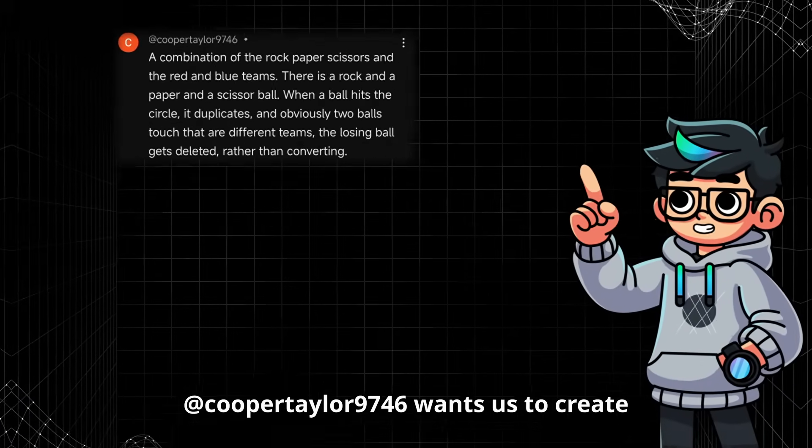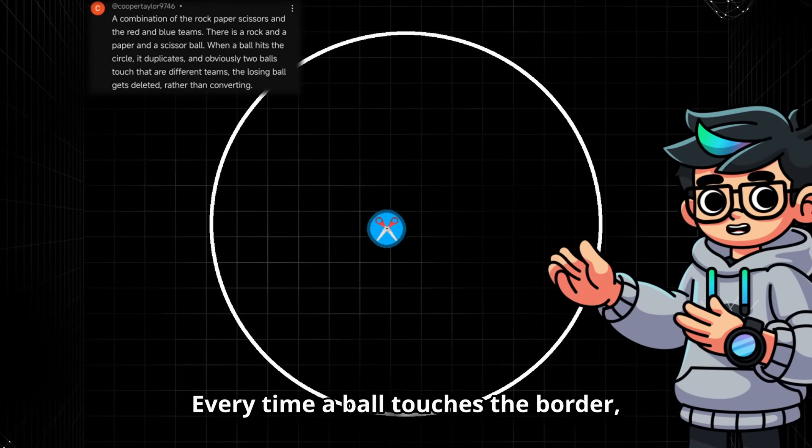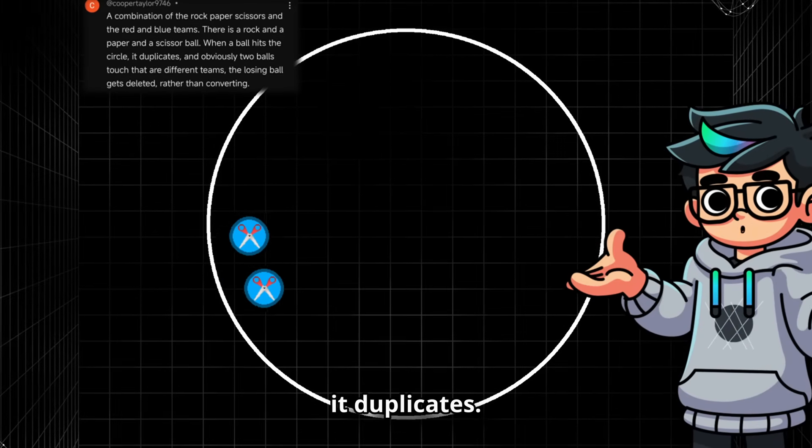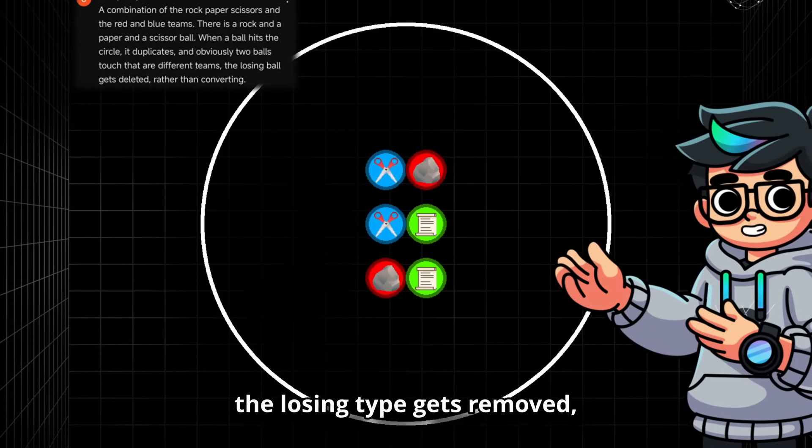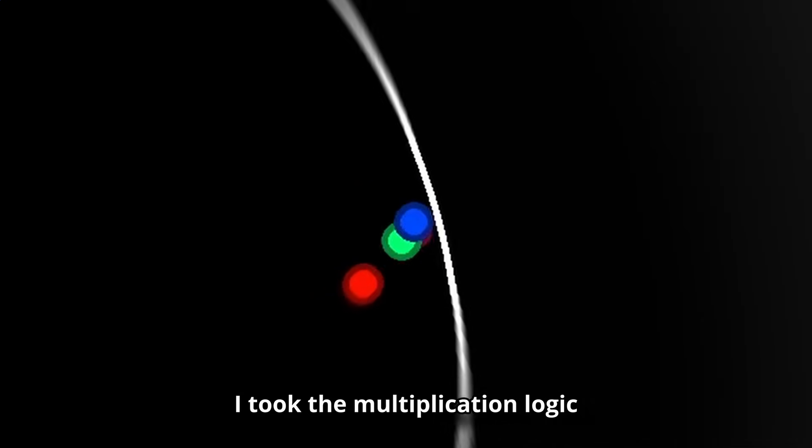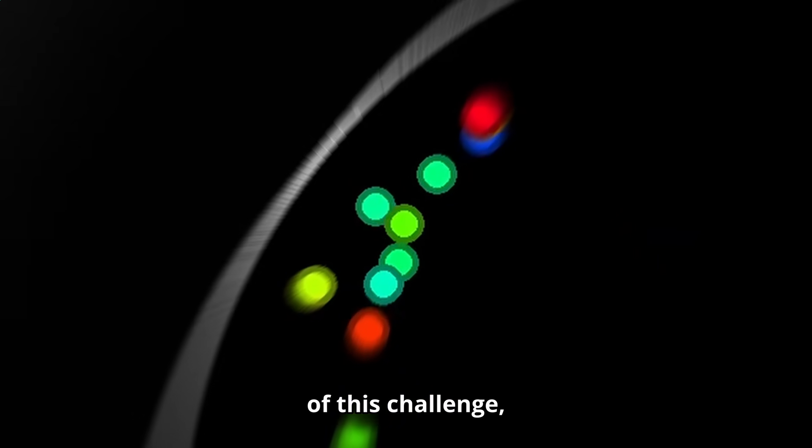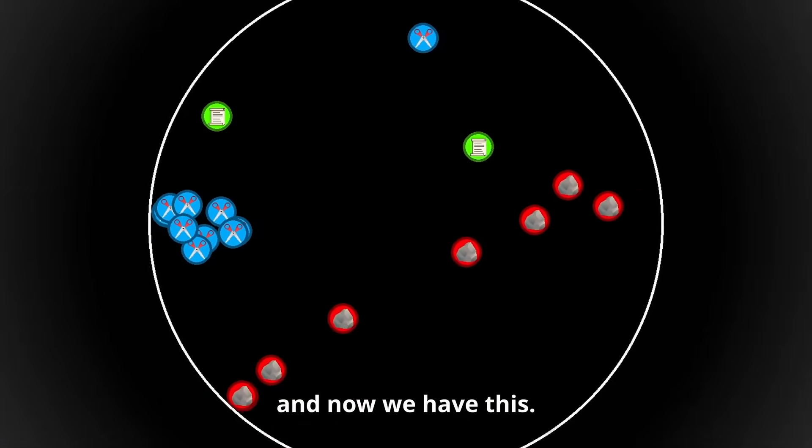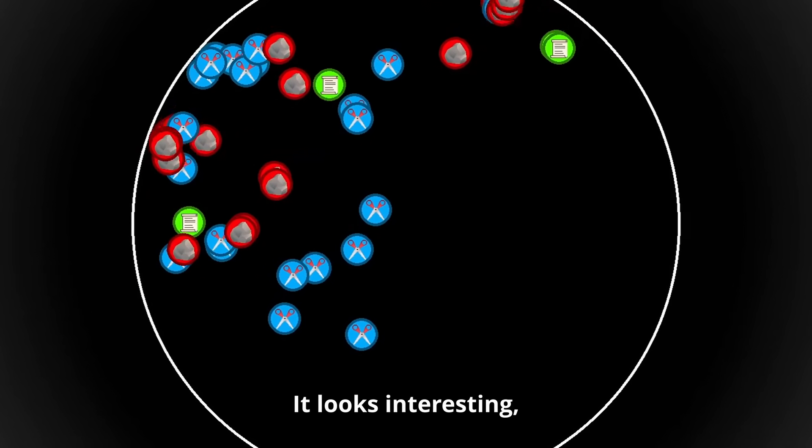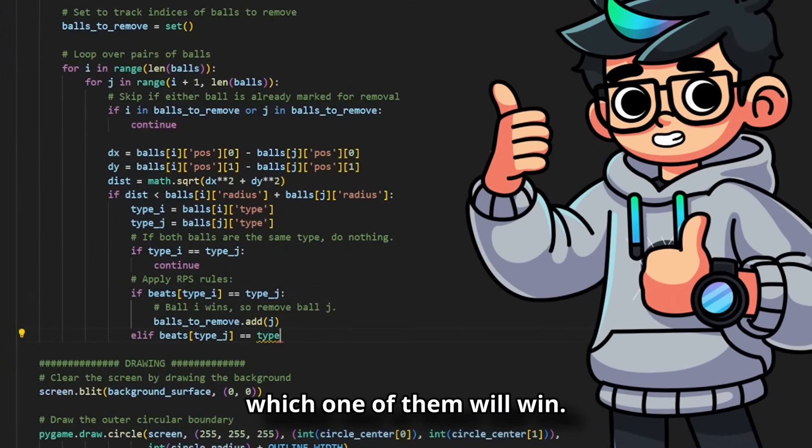Cooper Taylor wants us to create a rock-paper-scissors simulation game that works like this. Every time a ball touches the border, it duplicates. However, if two balls of different types collide, the losing type gets removed. I took the multiplication logic that I programmed back on day 1 of this challenge. Made a few adjustments, added pictures to the balls and now we have this. It looks interesting, but we need to program the removal logic. Let's see which one of them will win.